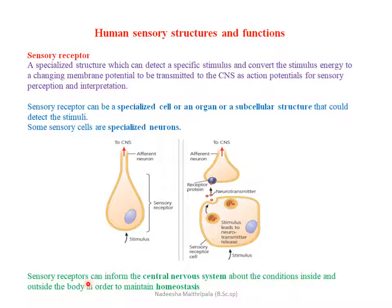The function of sensory receptors is to provide information about the inside and outside of our body to the central nervous system. This is very important to maintain a constant internal environment, which is also known as homeostasis. So sensory receptors provide information to the CNS to maintain our homeostasis.